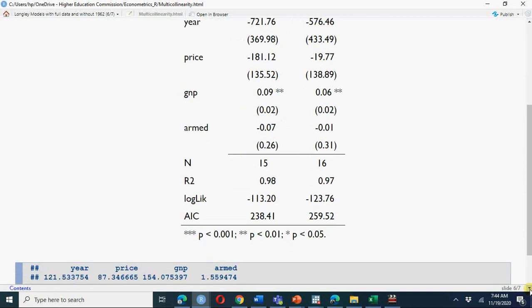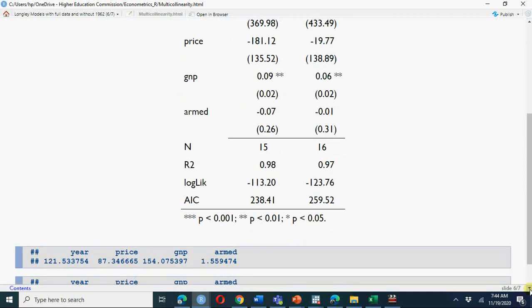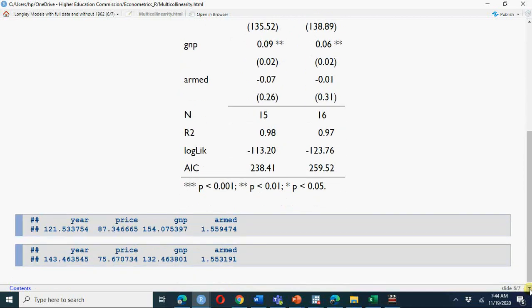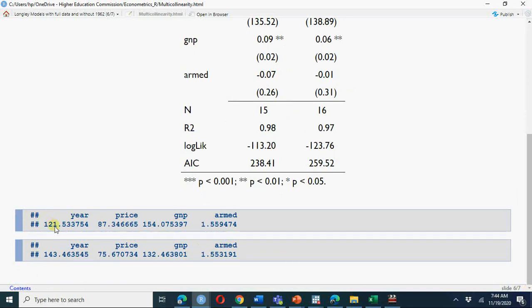This is how you can do it. Variance inflation factor for all this—you see very high variance inflation factor. All these variance inflation factors are greater than 20, greater than 10 as well.